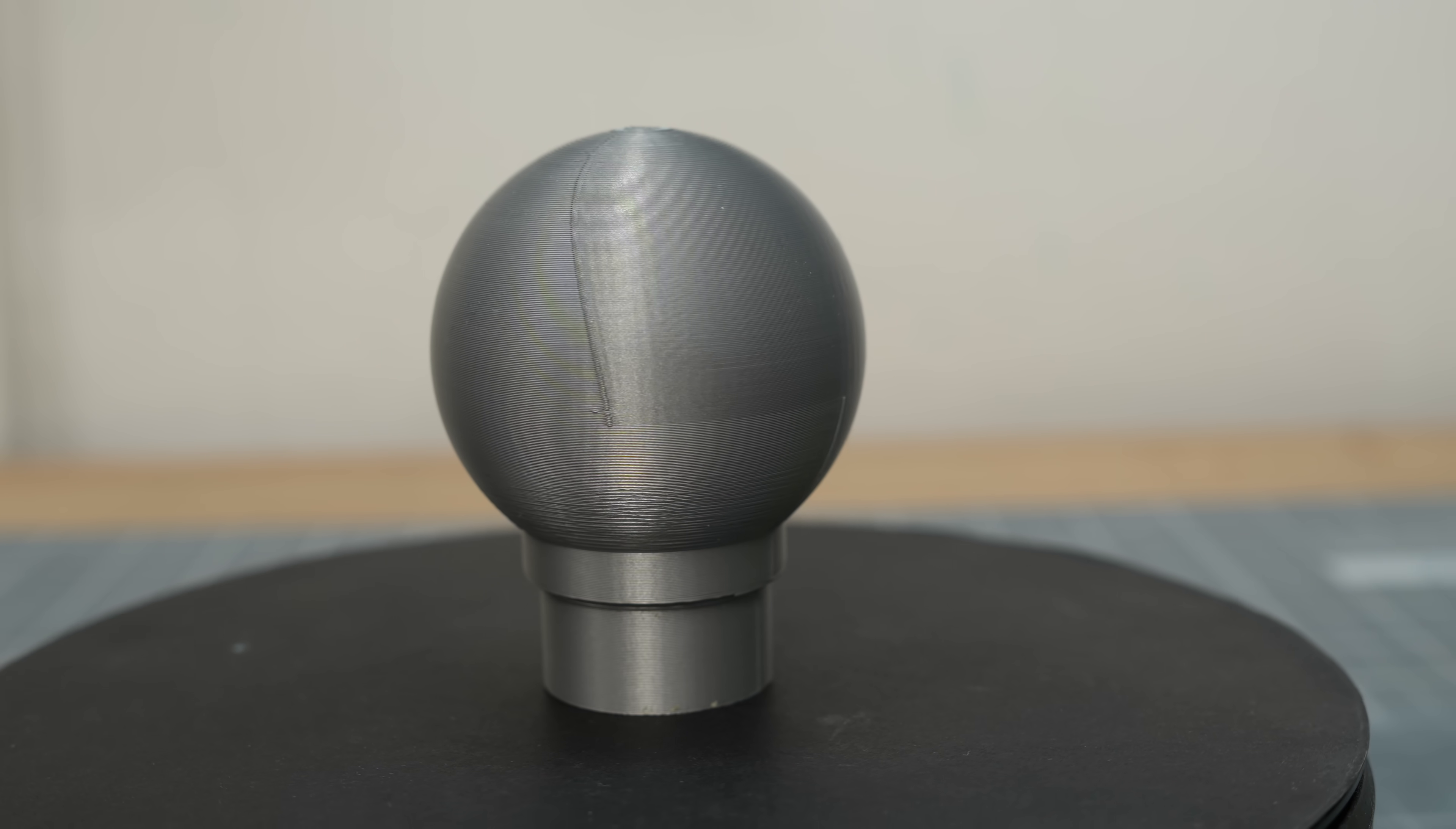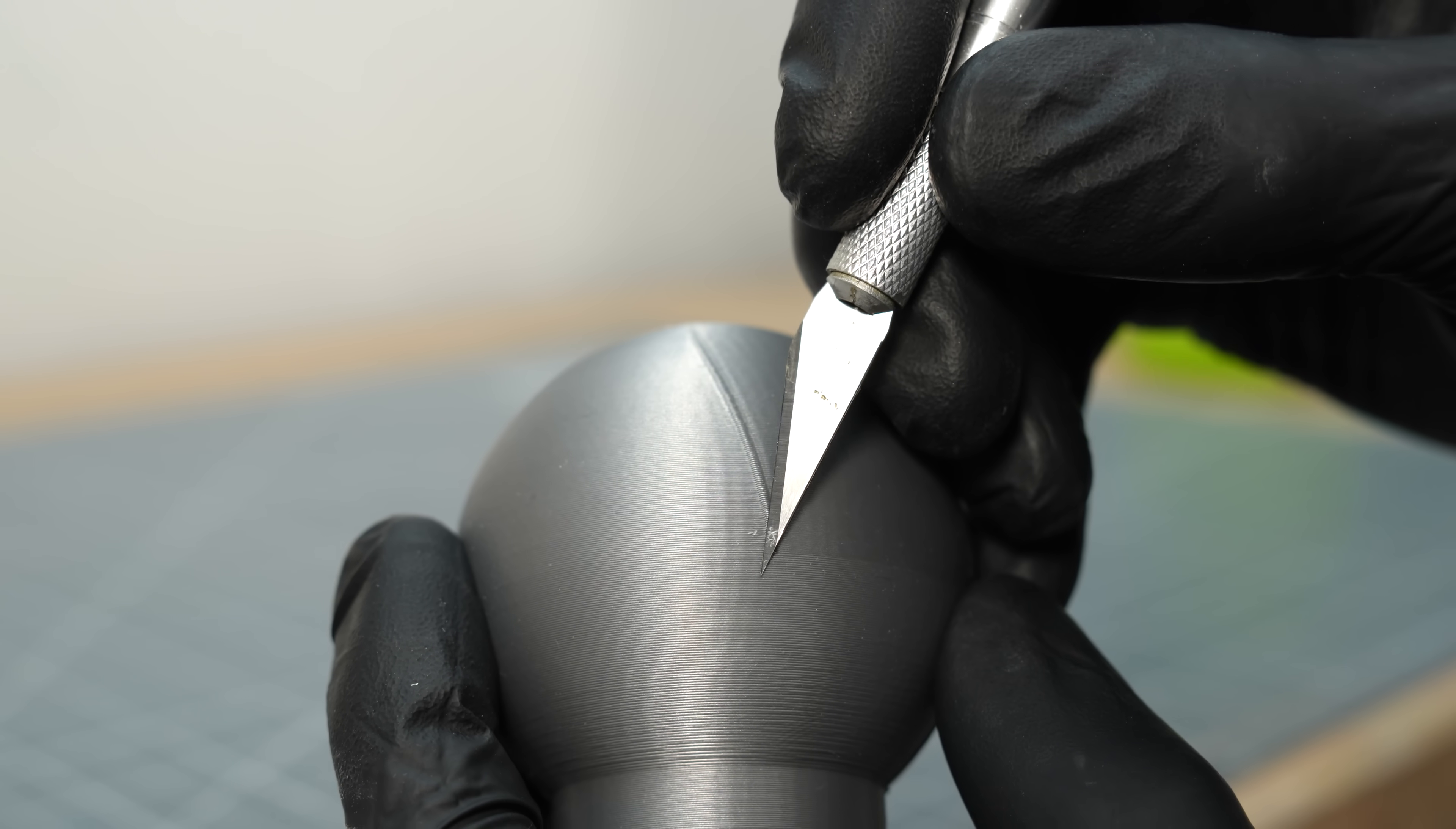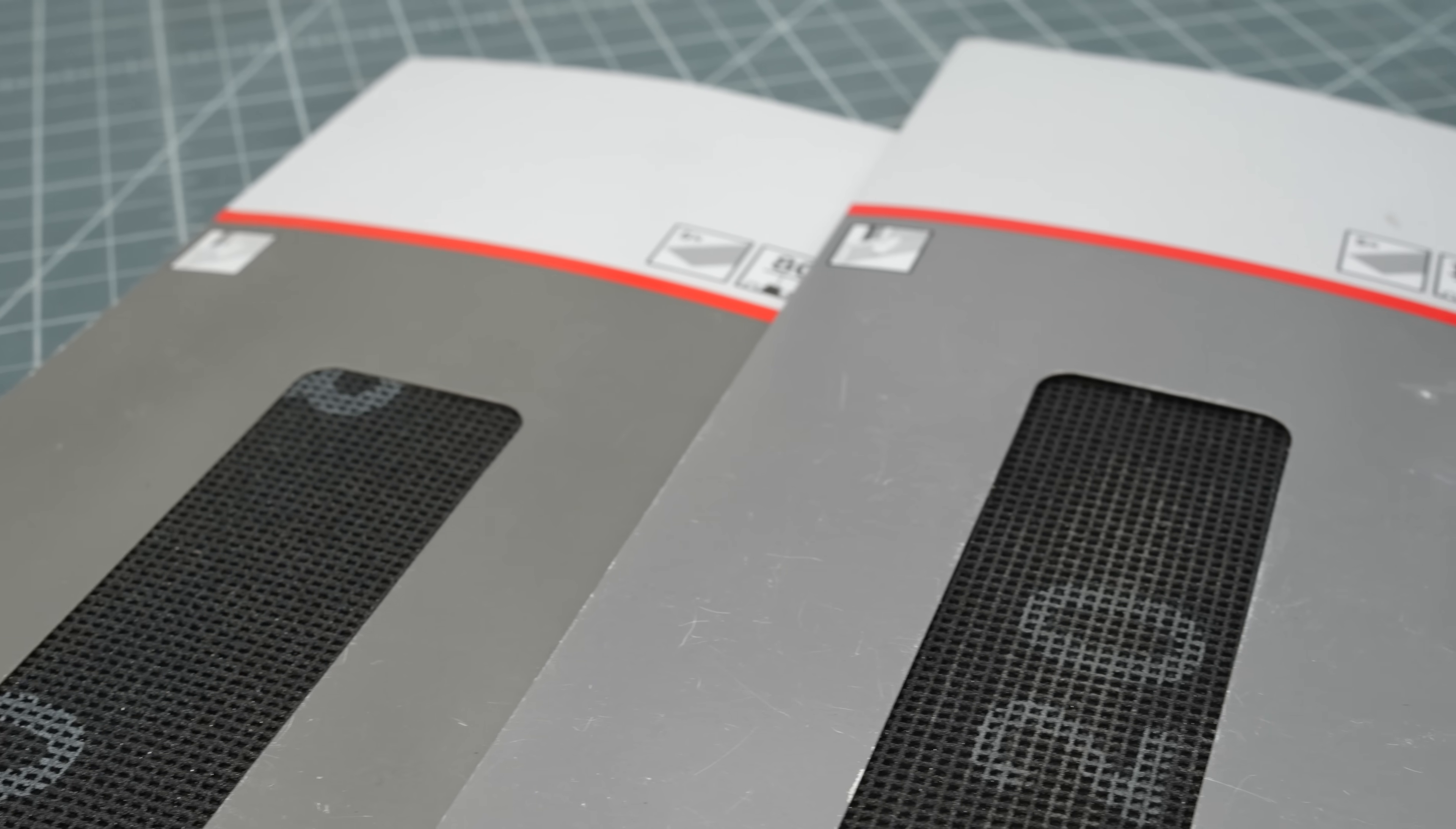Before I start smoothing I first work on the obvious spots with an exacto knife. Small overhangs or raised areas like these scars can be addressed this way in advance. I've had great experience with sanding meshes, someone suggested them in the comments once, and they work really well. They come in different grits and I start with 80.